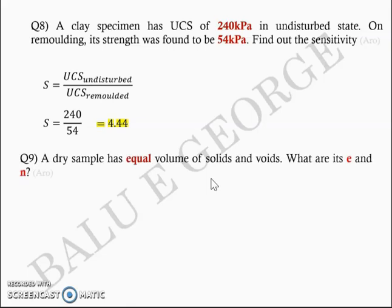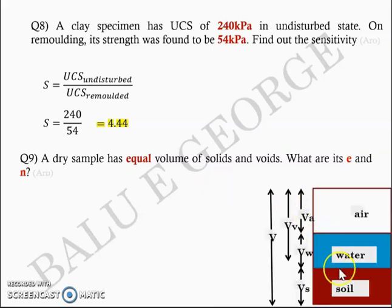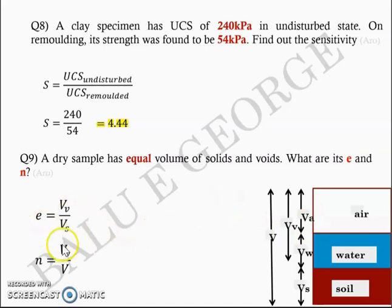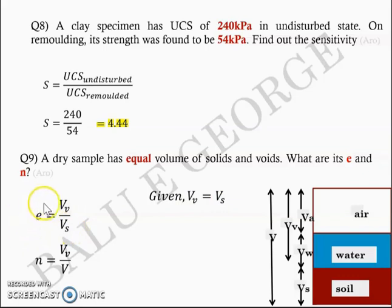Question number 9: A dry sample has equal volume of solids and voids. You are asked to find the voids ratio and the porosity. No numerical value is given — only that the sample is dry, meaning there is no water, and the volume of solids equals the volume of voids. Void ratio e = VV / VS and porosity n = VV / V. Since VV equals VS, the void ratio e = 1, and from that the porosity n = 0.5.